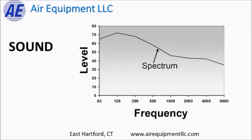All sound can be described as the transmission of acoustical energy via waves through a medium, such as air, water, or steel. All sound can be described as having two aspects. The first is the level, or the loudness. The higher the level, the more acoustical energy is present and it's louder. We measure the level or loudness in decibels, so the greater the number of decibels, the louder it is.